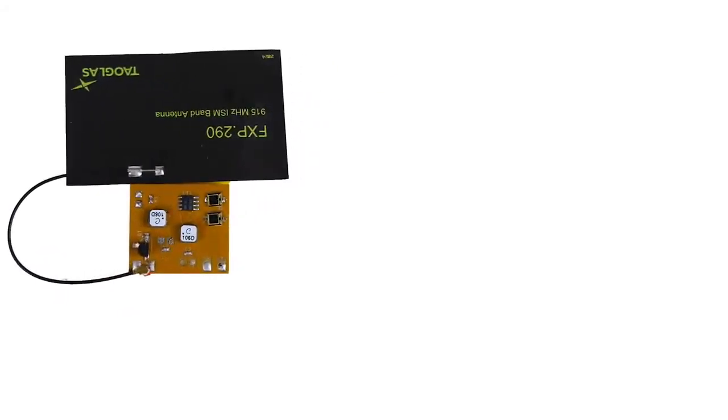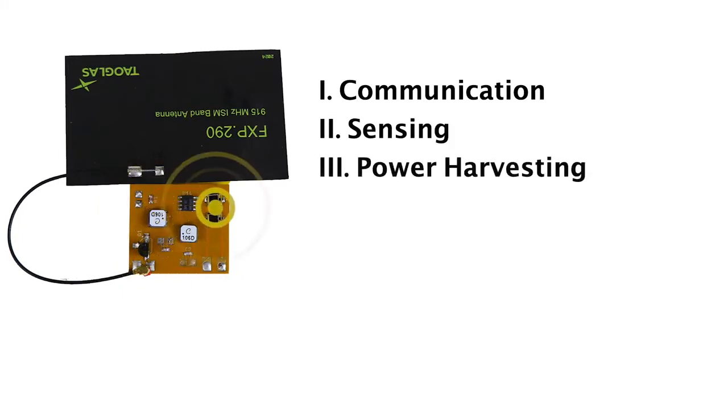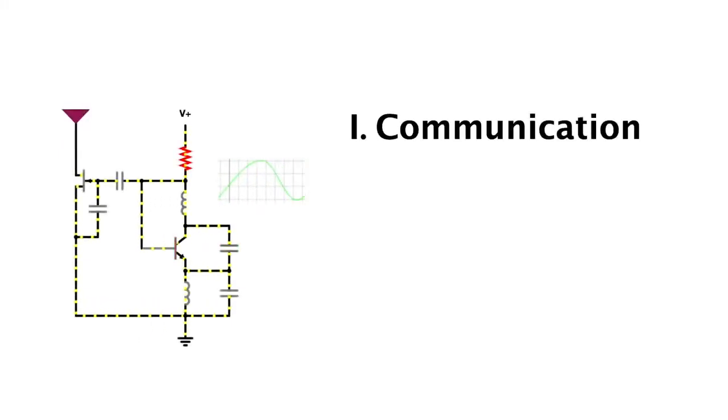The MARS tag can be split into three parts: communication, sensing, and power harvesting. The communications system is an ultra-low-power LC oscillator tuned to a unique frequency that modulates the antenna impedance to embed sensor information.